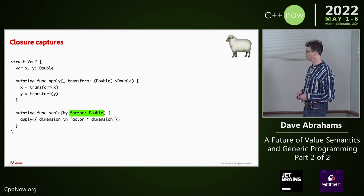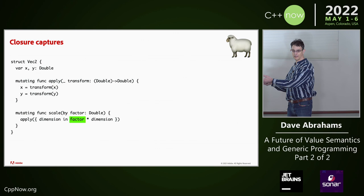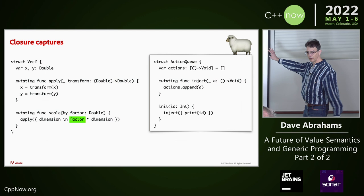Scale takes a double — this factor — and then it uses factor inside of a closure. That's a capture. Now let's look at another example that's very different.